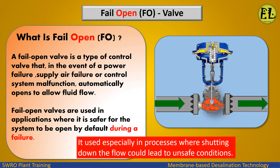What is fail open? A fail open valve is a type of control valve that, in the event of a power failure, supply air failure, or control system malfunction, automatically opens to allow fluid flow. Fail open valves are used in applications where it is safer for the system to be open by default during a failure, especially in processes where shutting down the flow could lead to unsafe conditions.